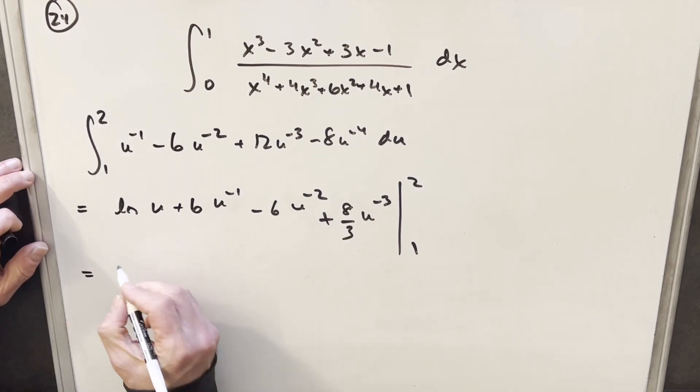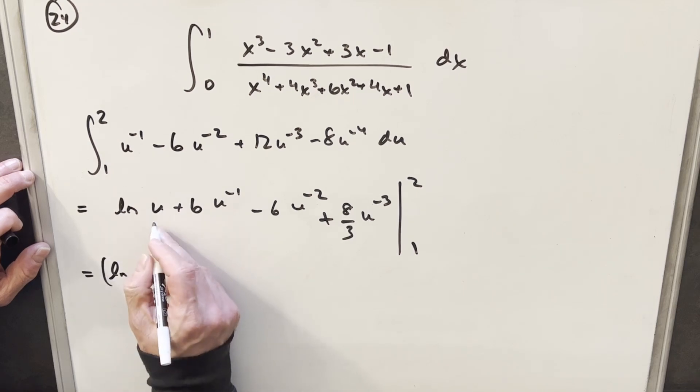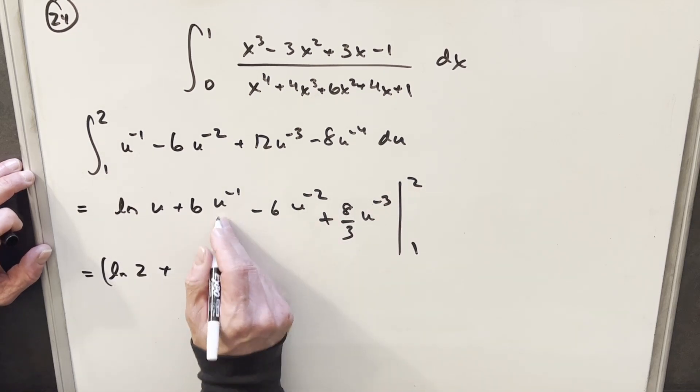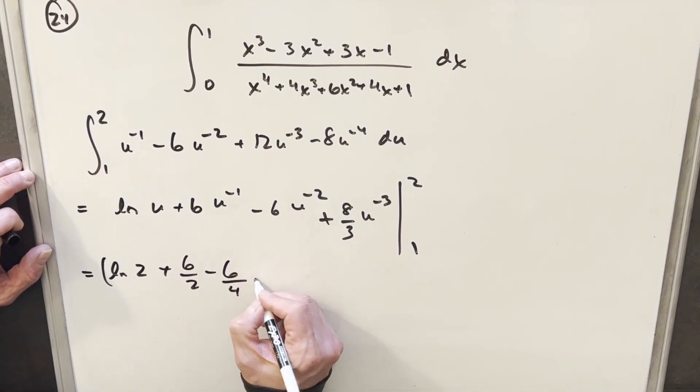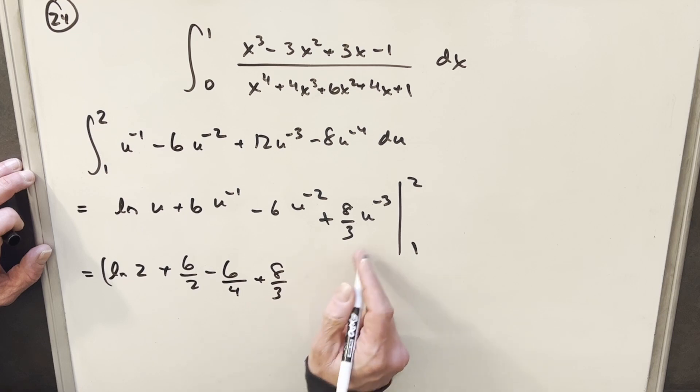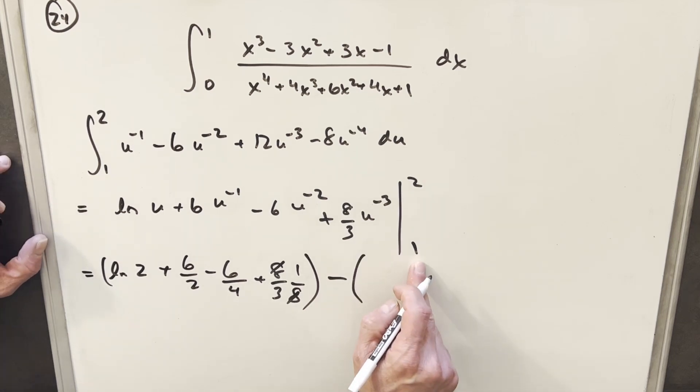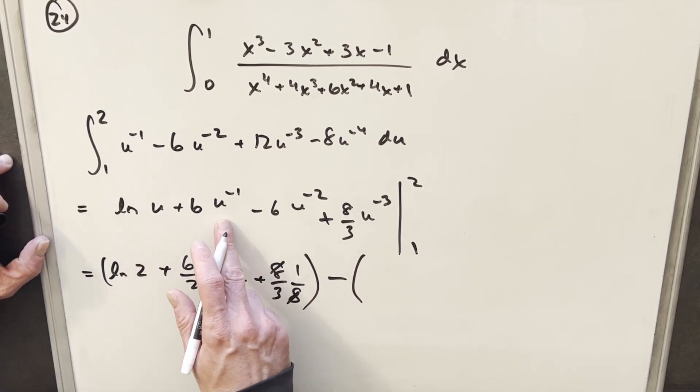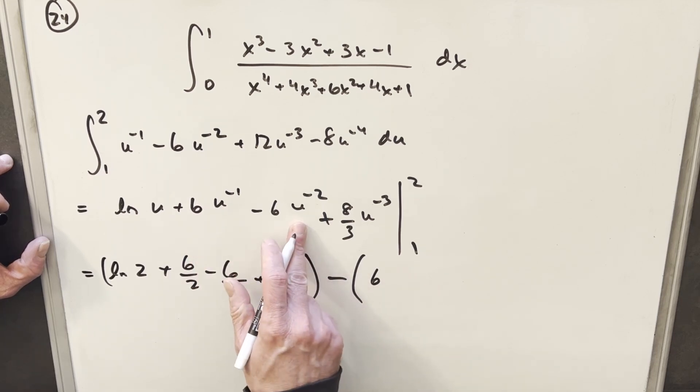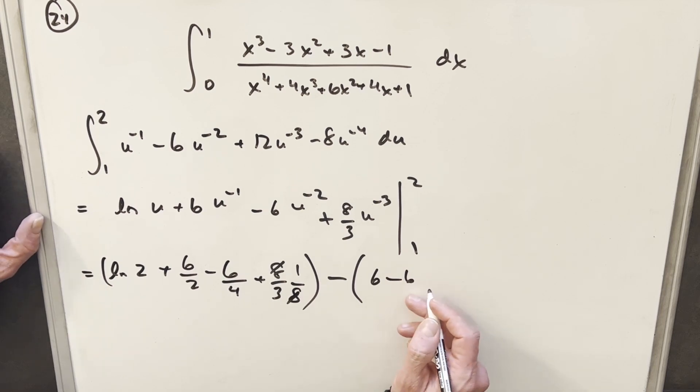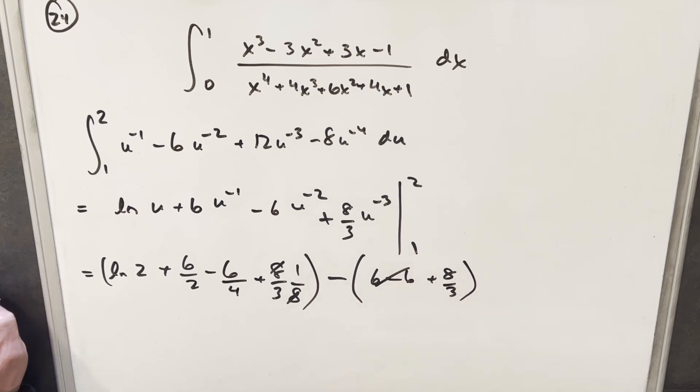Okay, so now we just need to evaluate this thing. So we're going to have, starting here, we're going to have natural log of 2, plugging a 2 in. Then here we're going to have a 6 over 2, minus 6 over 2 squared is 4, plus 8 thirds. 1 over 2 cubed is going to be an 8 there. That's going to cancel, but we'll come back to that. Then plugging a 1 in, natural log of 1 is 0. Plugging a 1 in here, we're going to have 6 over 1 is just 6. Here we're going to have a minus 6 over 1 squared, but that's just 6. And then we're going to have 8 thirds. Okay, here this piece is going to cancel.